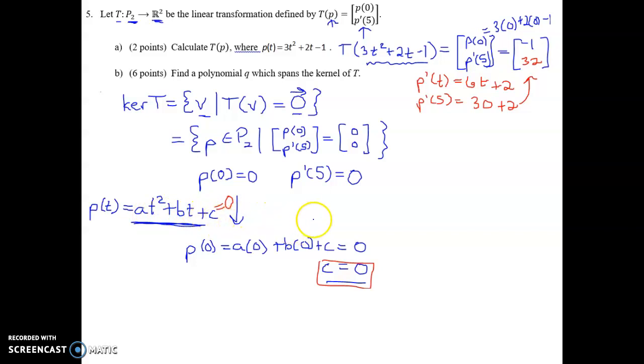If P of T is equal to this generic polynomial AT squared plus BT plus C, then P prime of T would be 2AT plus B. The derivative of T is 1, the derivative of a constant is 0. We already know that constant is 0 anyway.